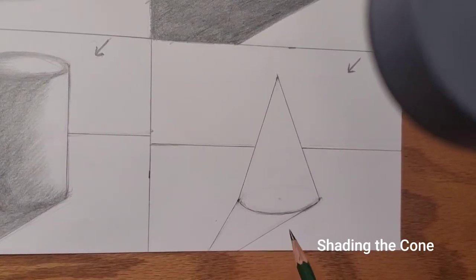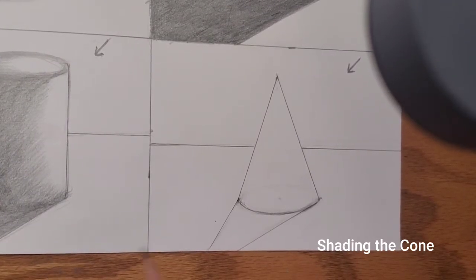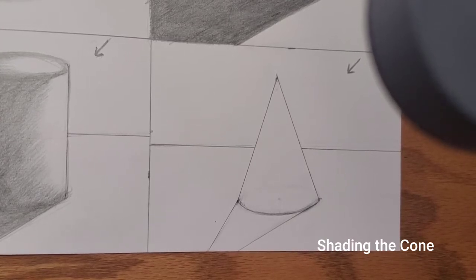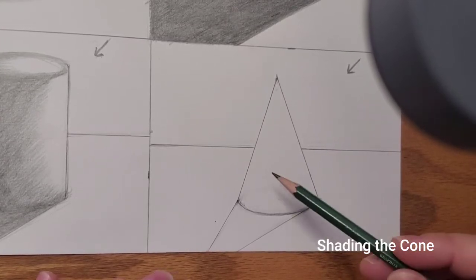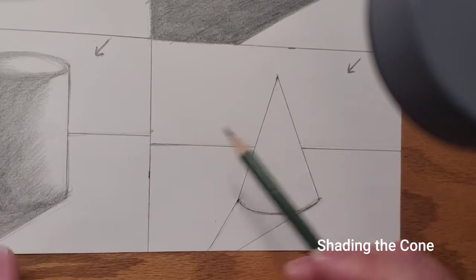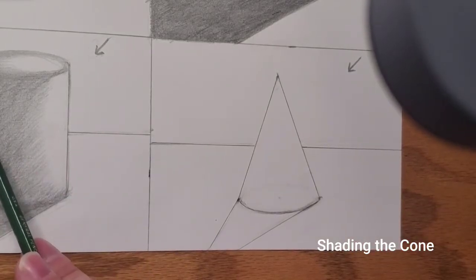The cone is very similar to the cylinder. We did the cylinder last class; we're going to do the cone today. Should take us all of 10 minutes. There's a little highlight line on one side, and then it goes gradually four, three, two, one to the other. Same thing here.